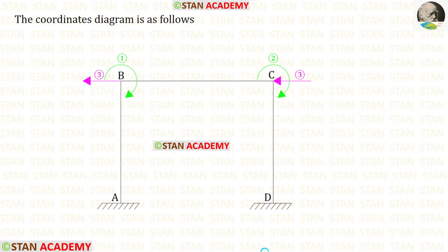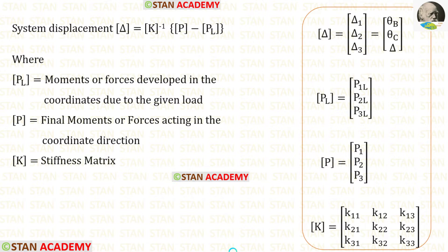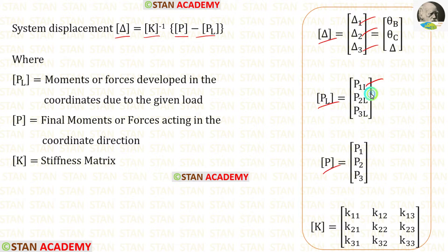Now let us make the coordinates diagram. The first coordinate is at point B and the second coordinate is at point C. The third coordinate is the sway, and since the sway occurs towards the left side, we keep the sway coordinate also towards the left side. The formula for displacements is: delta matrix equals K matrix inverse times (P matrix minus PL matrix). Since there are three coordinates, the stiffness matrix will be of size 3×3.